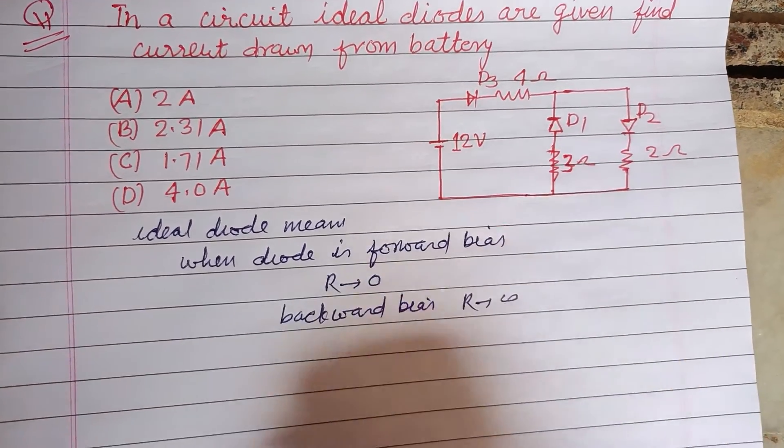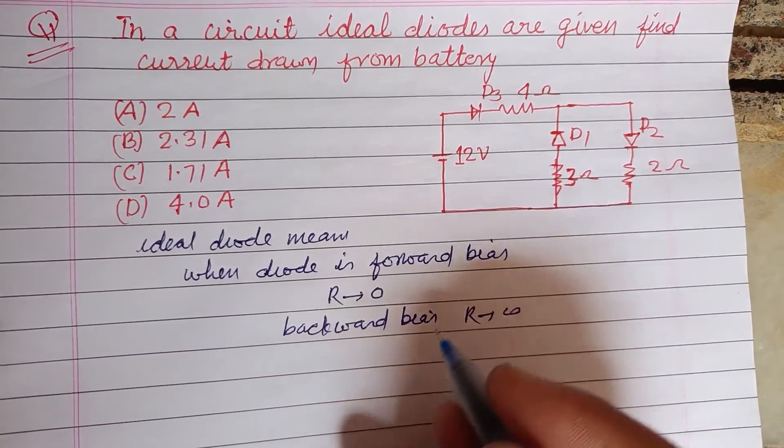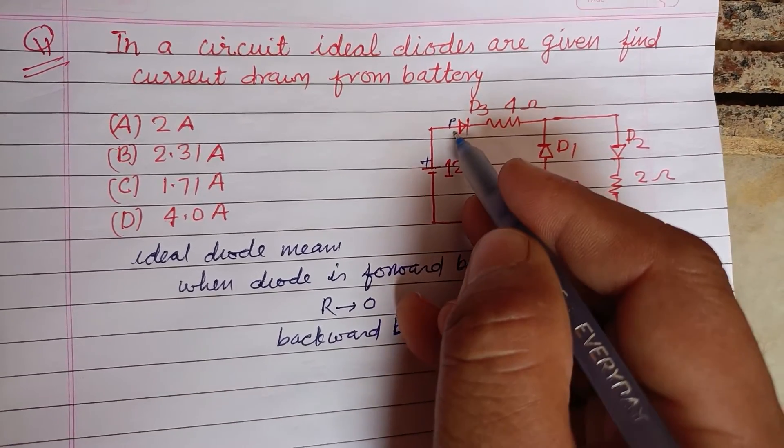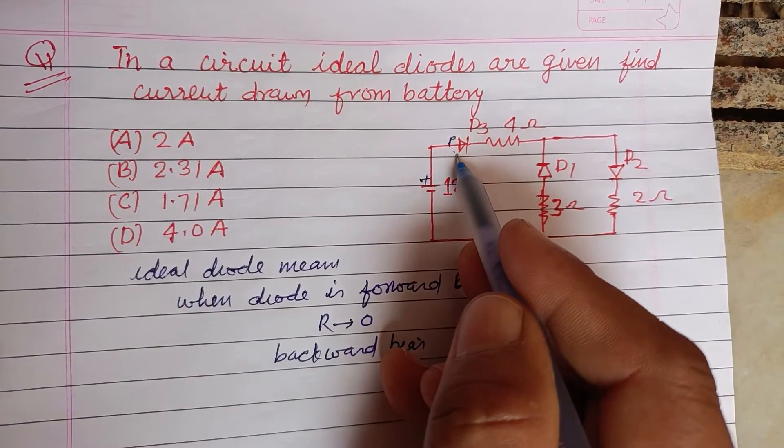And so here this is positive and this is P, so it is forward biased.